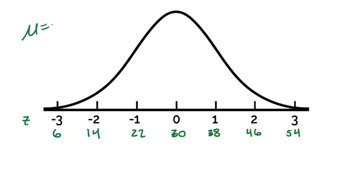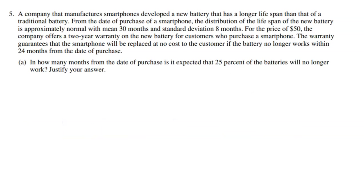Because if you know the mean of 30 months, and you know the standard deviation of 8 months, and you know the shape is normal, then it really helps us do a lot of cool math with this data. Let's dive into part A: in how many months from the date of purchase is it expected that 25% of the batteries will no longer work? Justify your answer.